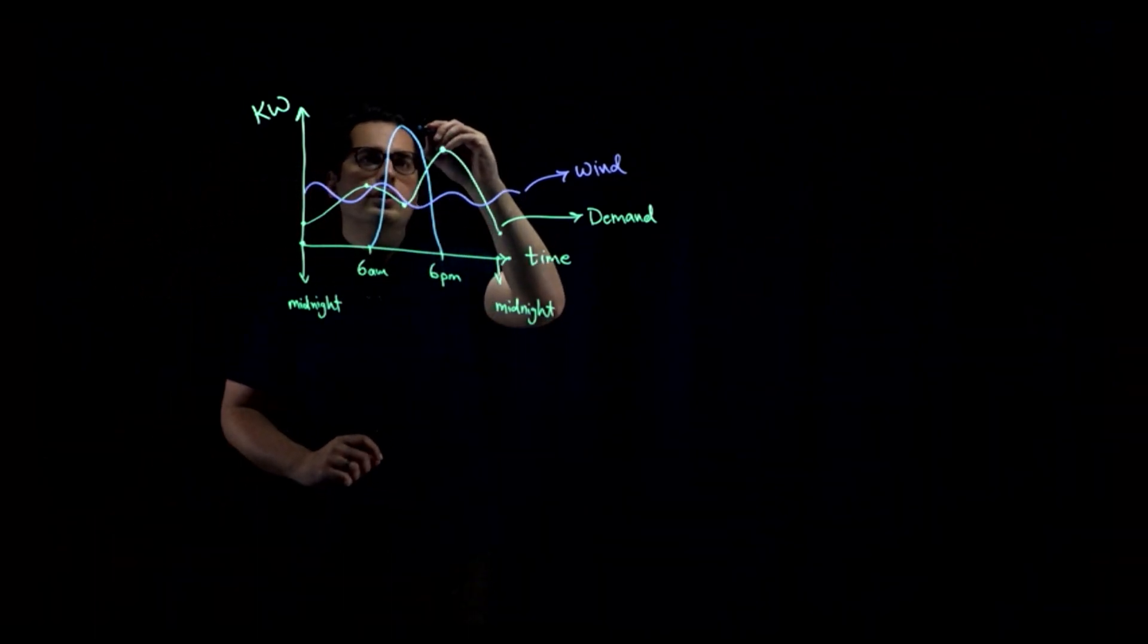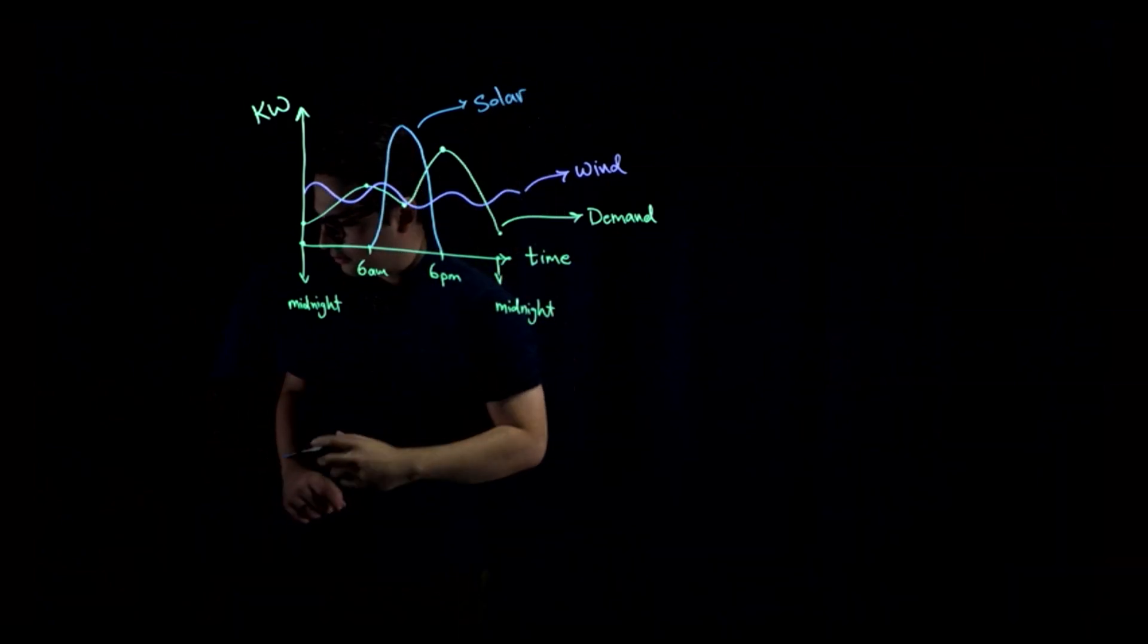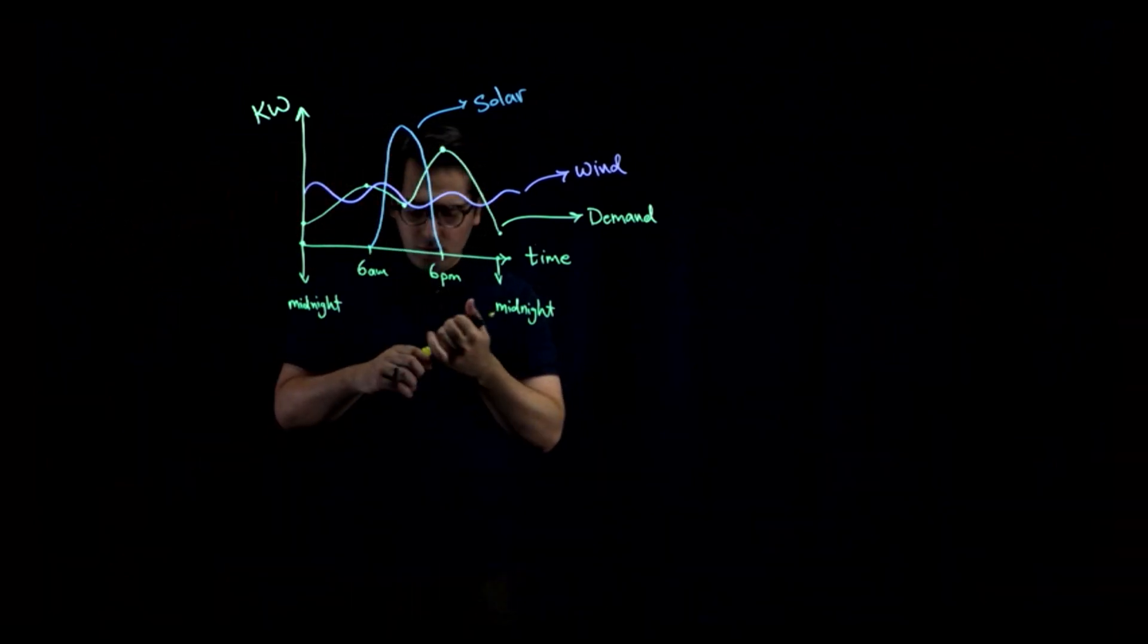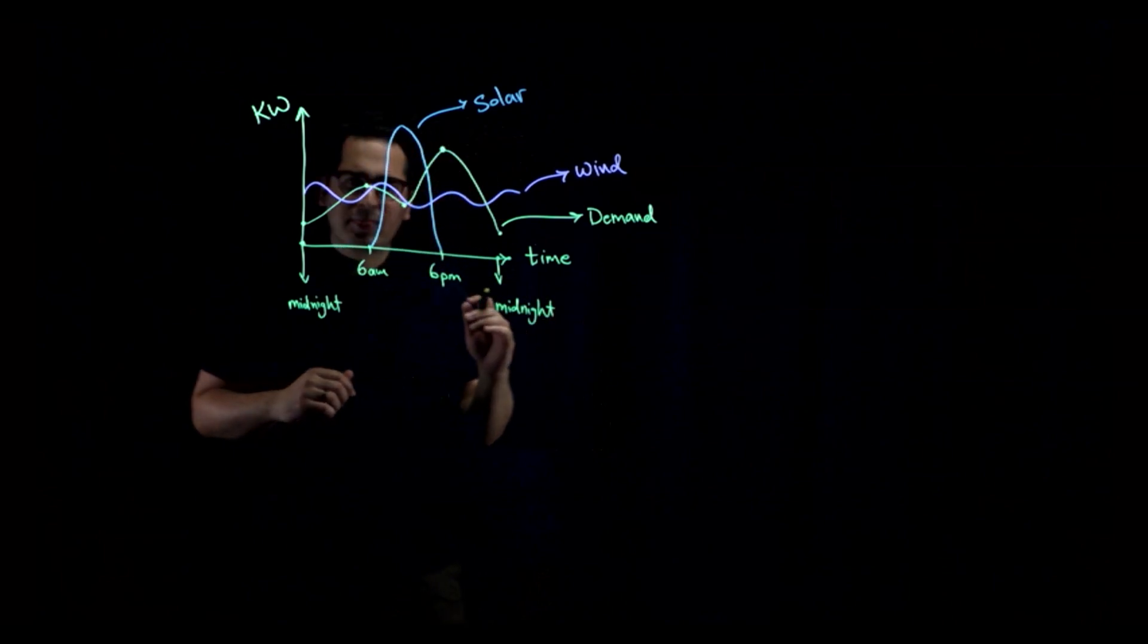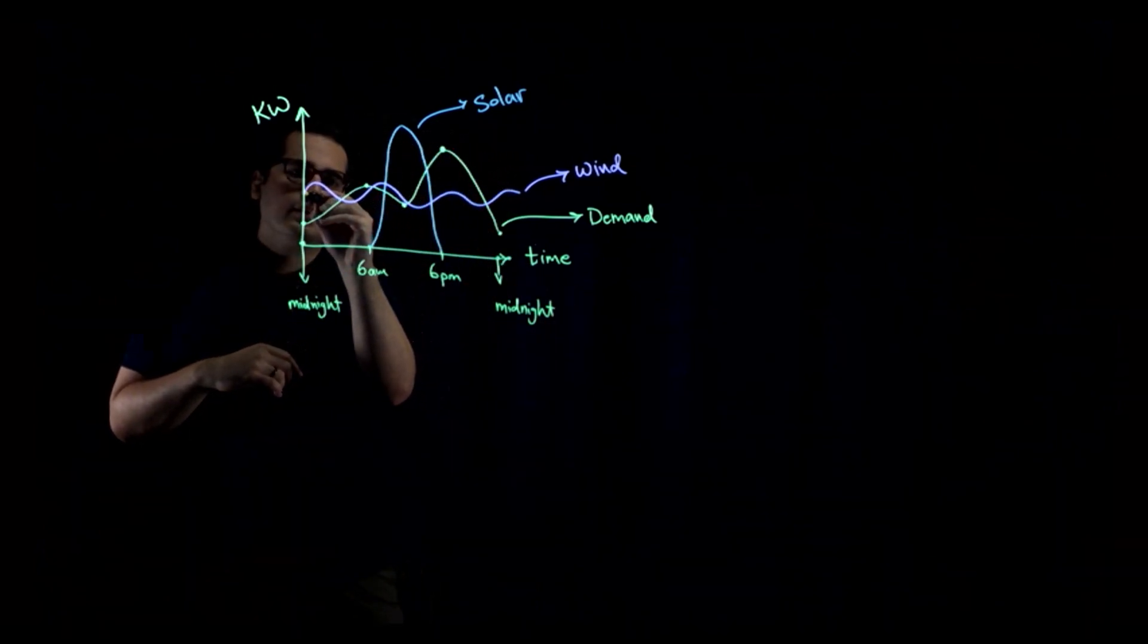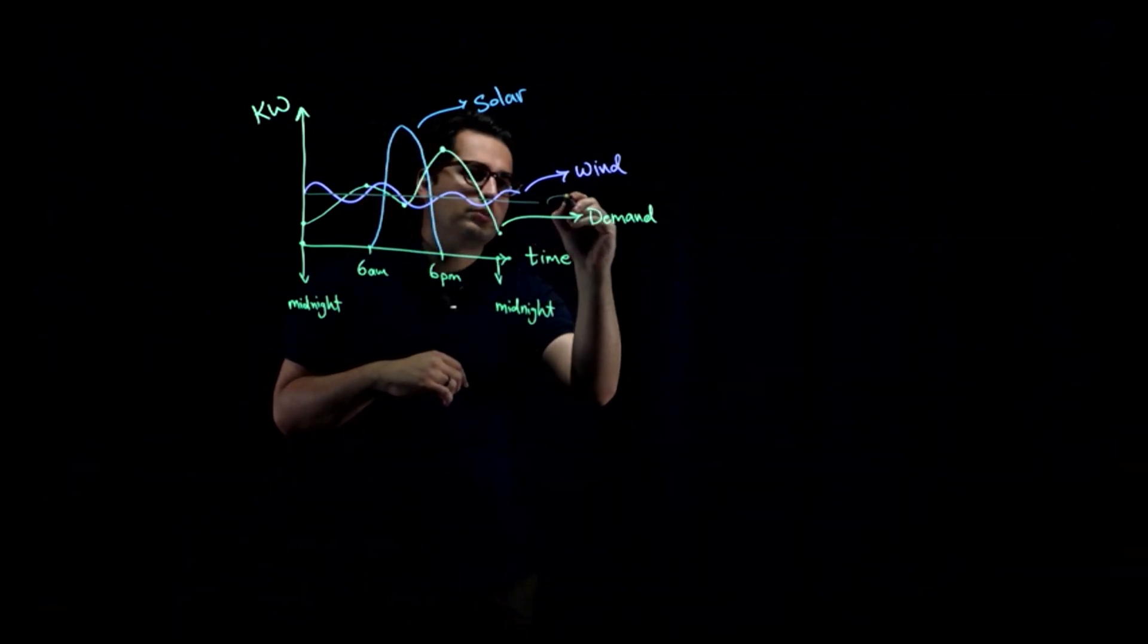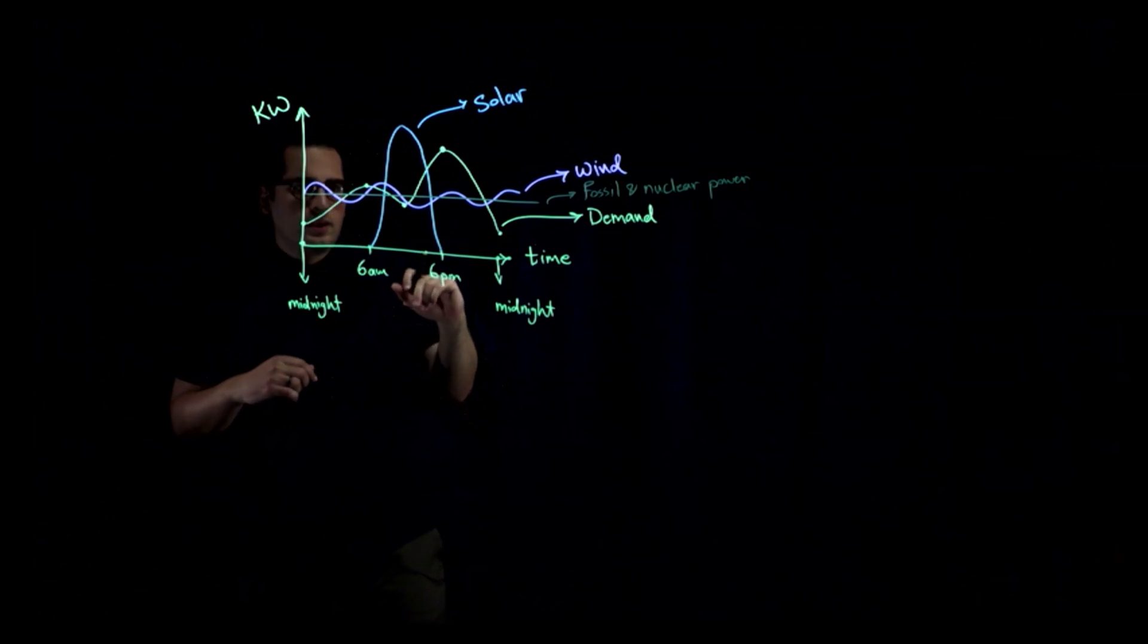This blue one is solar-generated electricity. What else do we have? We have fossil fuel and nuclear-generated electricity. And that actually creates or generates electricity at a constant rate. So it would be something like this line.